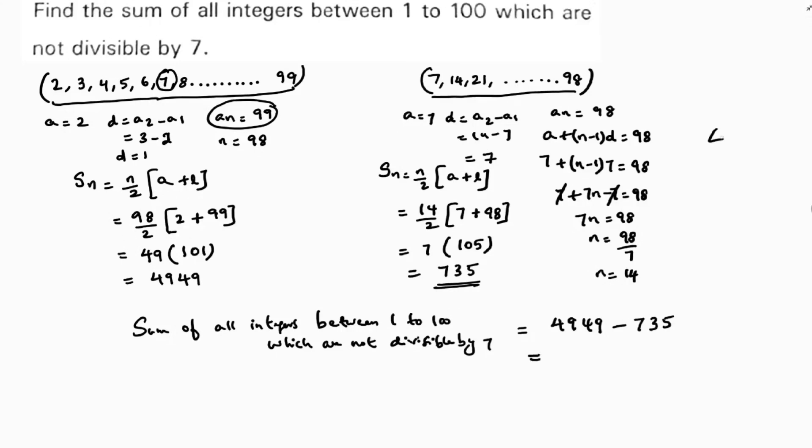So you will subtract this value, 4949 minus 735. 9 minus 5 is 4, 4 minus 3 is 1, 9 minus 7 is 2, 4 minus 0 is 4. So answer is 4214.